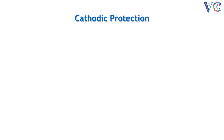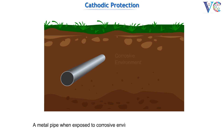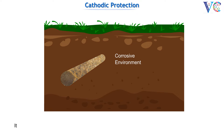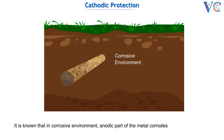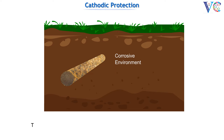Cathodic Protection. A metal pipe, when exposed to a corrosive environment, undergoes corrosion. It is known that when a metal is in a corrosive environment, the anodic part of the metal corrodes, while the cathodic part does not corrode. Hence, if the whole metal is converted to a cathode, then it can be protected. This is the concept of cathodic protection.